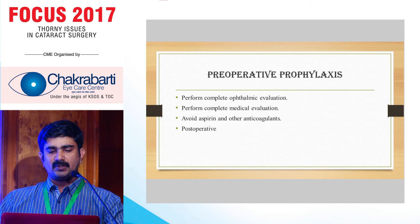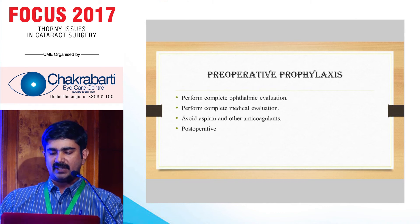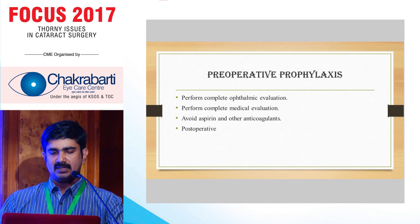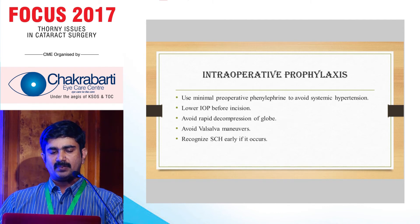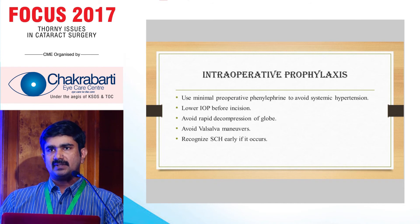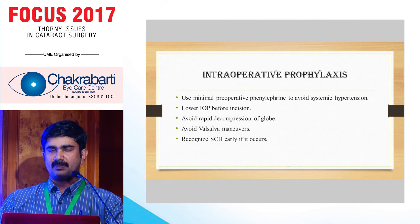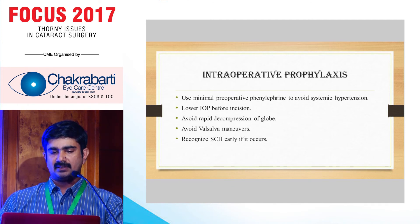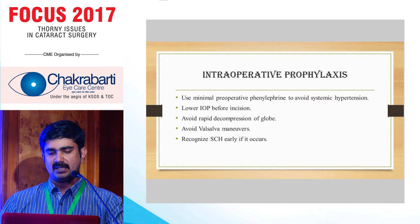Preoperative prophylaxis involves identifying these risk factors and correcting as many as possible. Intraoperative prophylaxis includes making a small stab wound before lowering IOP, releasing the pressure slowly, avoiding Valsalva maneuvers by the patient, and avoiding rapid decompression of the globe. The most important step is recognizing suprachoroidal hemorrhage as early as possible and preventing further complications.